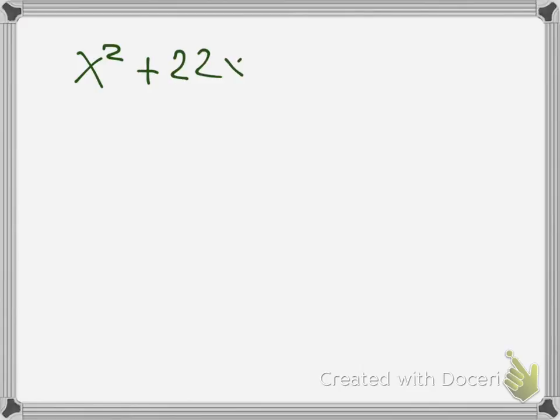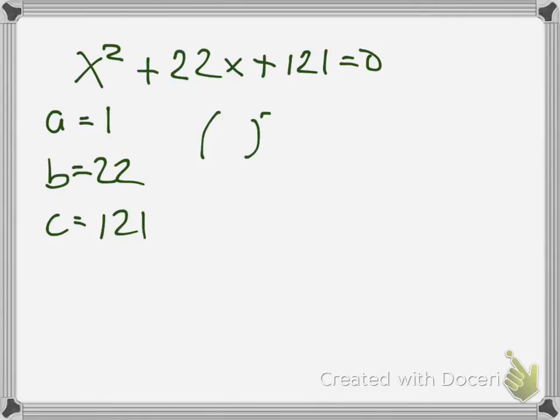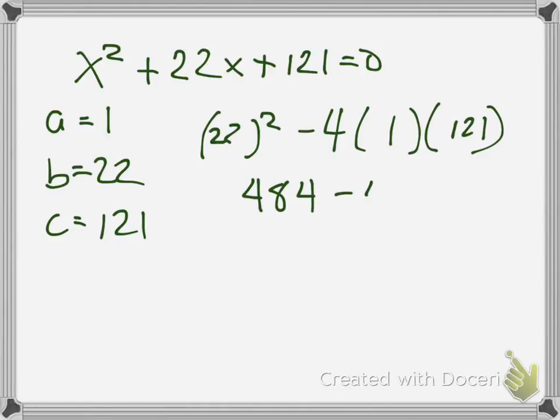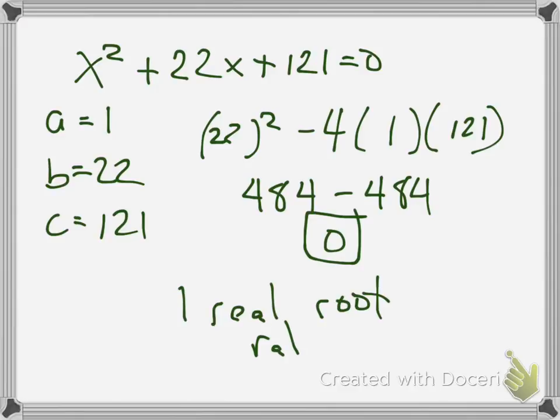Another example. Here, I got a is 1, b is 22, c is 121. Plug them in. Do your calculations. Notice that you get a discriminant of zero. So this time the discriminant is equal to zero. And then that would tell you one real rational root. Forgot to put the word rational. But there you go. So it's kind of like that. It works out fairly well.